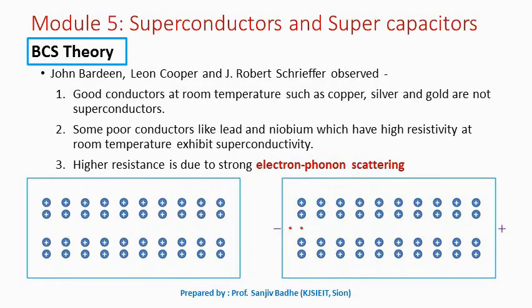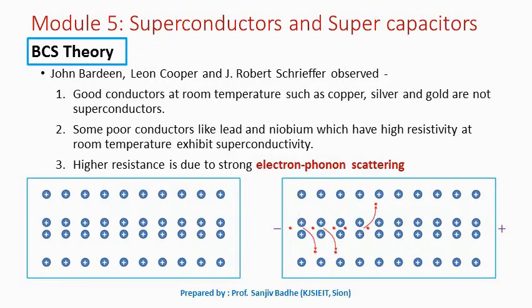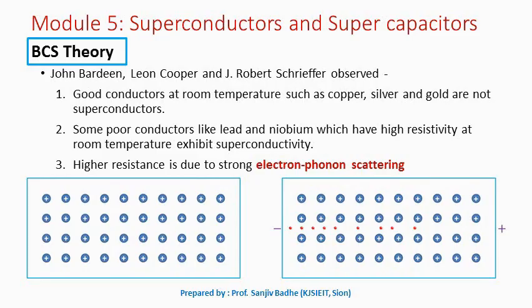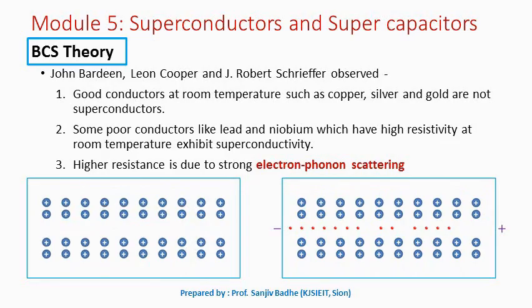According to BCS theory, superconductivity arises from a subtle interaction between free electrons and lattice vibrations — that is, phonons. So the main reason, according to BCS theory, behind superconductivity is electron-phonon interaction.